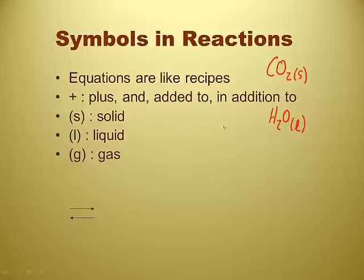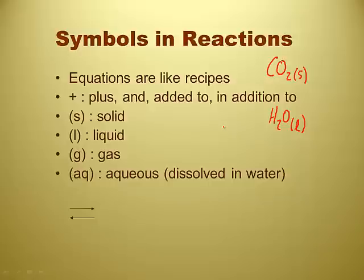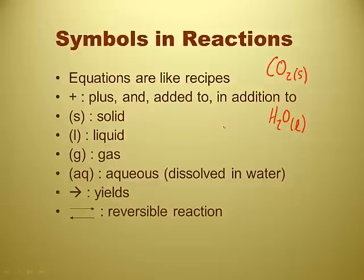Gases are written as G's. Aqueous. AQ. Dissolved in water. That makes sense. Aqua, aqueous, dissolved in water. So solutions are aqueous. And an arrow means yields. Yields or produces, makes. Reacts to form. And then there's this double arrow, which means a reversible reaction is happening. It turns out that some reactions can go forwards and backwards. Equilibrium. Yeah, I remember that. Equilibrium. We'll do that later in the year.